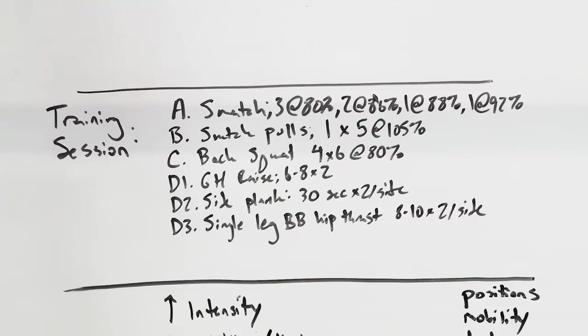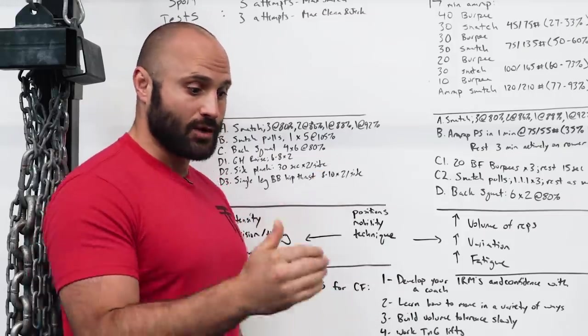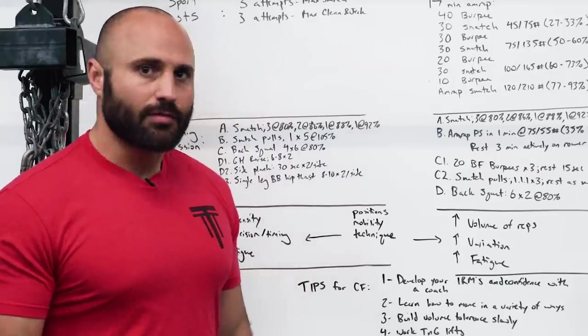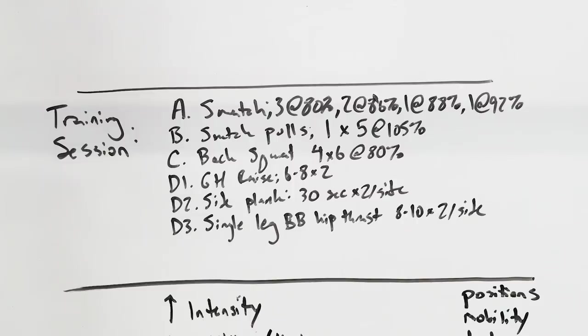Then snatch pulls, which would be an accessory movement for the snatch. Five singles at 105% of your one rep max. Again, those are rest as needed between. So you pull a lift as hard as you possibly can, sit down, rest for three to five minutes, and then repeat that five times.